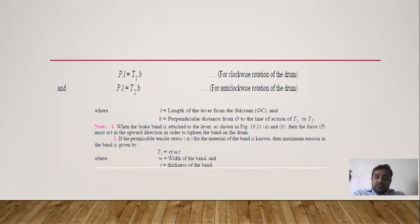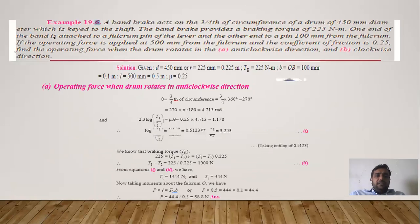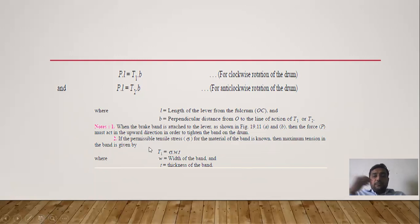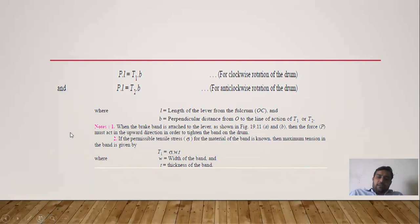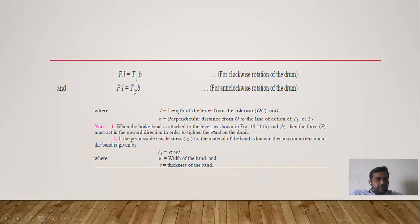In summary, for a simple band brake: first find the limiting ratio using 2.3 * log(T1/T2) = mu*theta; then find the braking torque tb = (T1 - T2) * r or (T1 - T2) * re if thickness is considered; then take moments at O to find the load P. To find the width of the band: T1 = sigma * w * t.